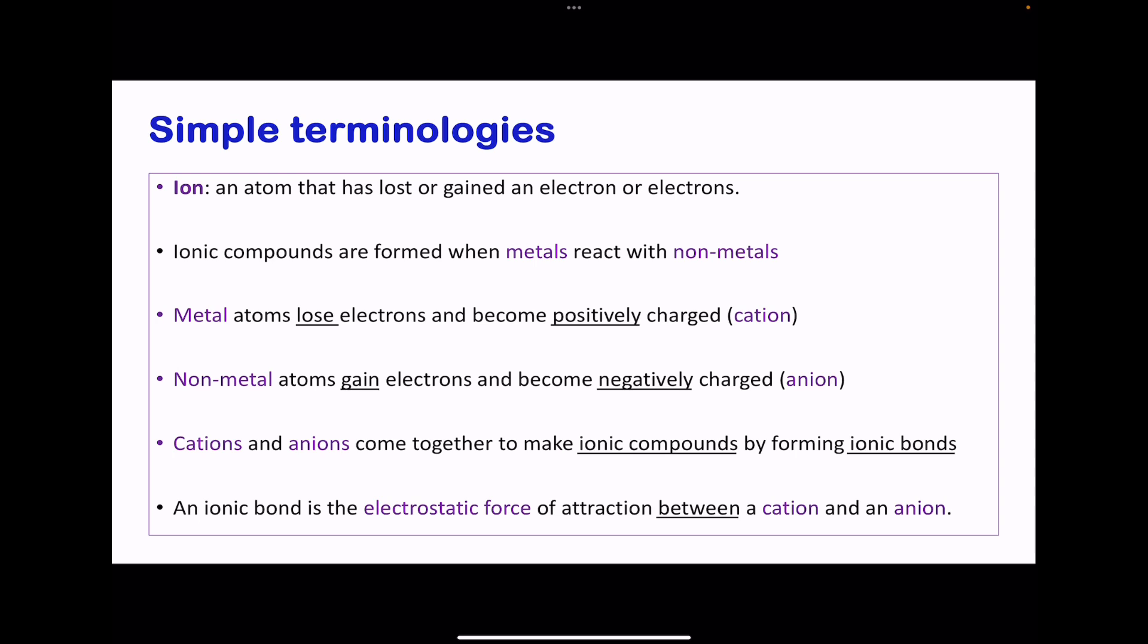We're going to begin with the simple terminologies. An ion is an atom that has gained or lost an electron or electrons. Atoms from group 1 can lose one electron, atoms from group 2 lose two electrons, while atoms from group 7 gain one electron. Atoms from group 6 gain two electrons, so it can be one or more.